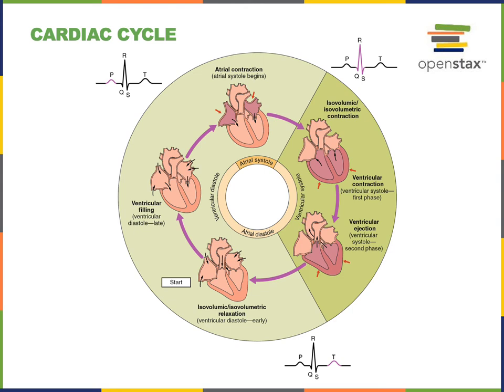The cardiac cycle begins with contraction of the atria — atrial systole — followed by isovolumetric contraction, the early phase of ventricular systole. During isovolumetric contraction, the blood pressure inside the ventricles rises but the blood volume remains constant. Then the late phase of ventricular systole — ventricular ejection — occurs when blood pressure inside the ventricles is greater than blood pressure inside the arteries, and blood flows out into the arteries.